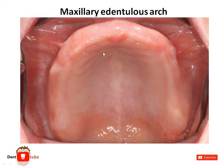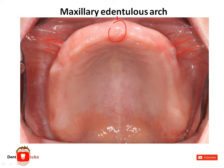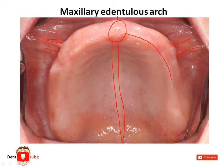Now let's try to learn those structures in this clinical picture. This is the labial frenum. These structures are the buccal frenum. This is the incisive papilla. This structure is the mid-palatine raphe. This is the crest of the alveolar ridge.